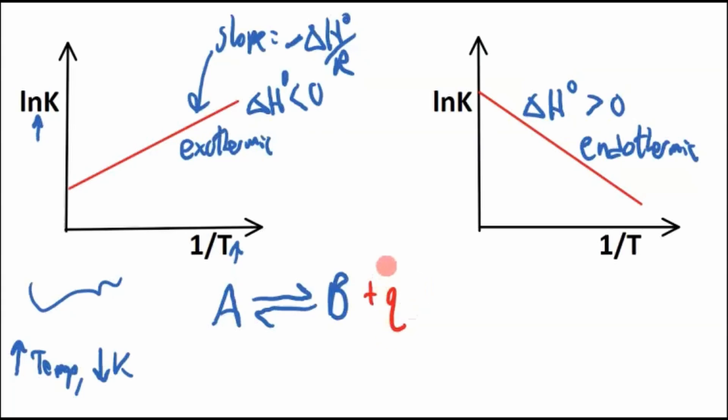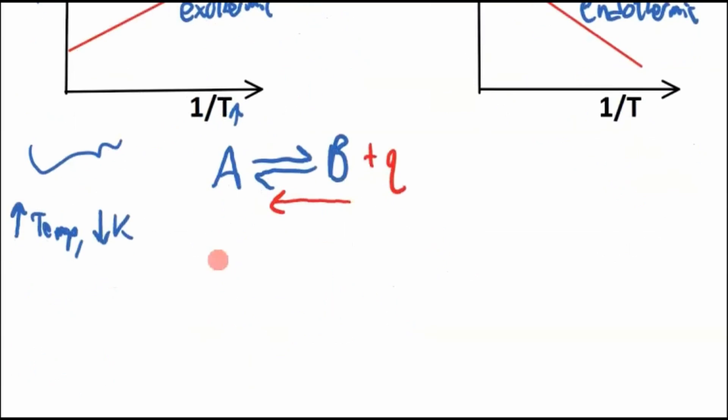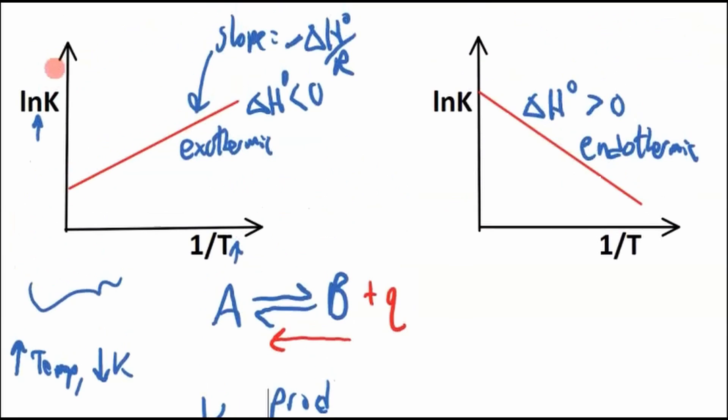Well, if we increase the temperature, that's going to drive the reaction to the left. And K, capital K is equal to, it's like our products over reactants. Well, if we're shifting it to the left, we're creating more reactants, we're losing products, so K is going to go down, which is what we have expected here.